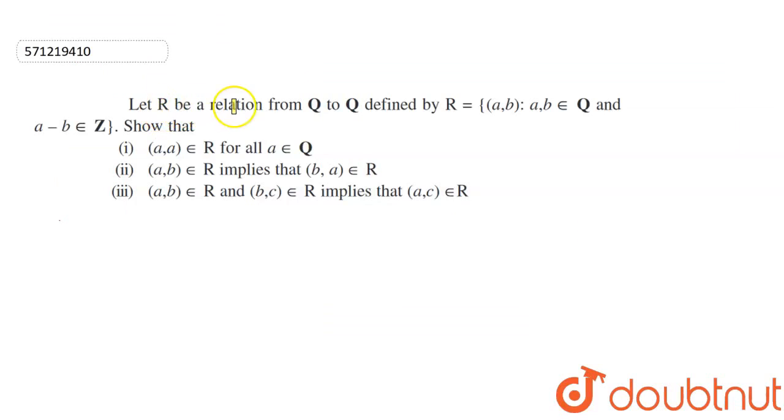Let R be a relation from Q to Q defined by R = {(a,b): a,b ∈ Q and a-b ∈ Z}. We have to show that the following statements are true.